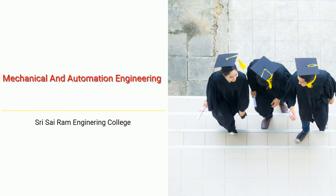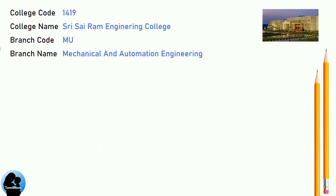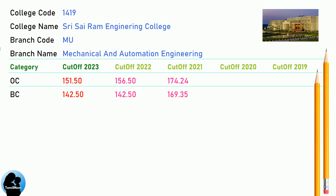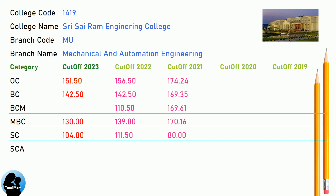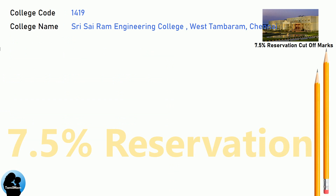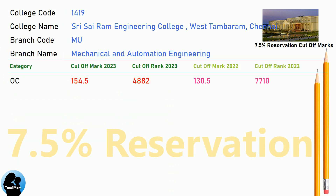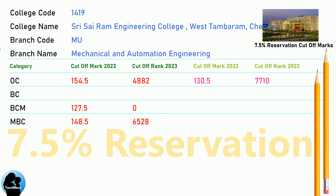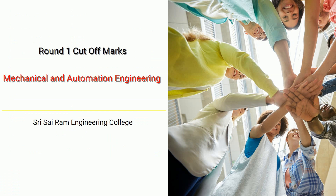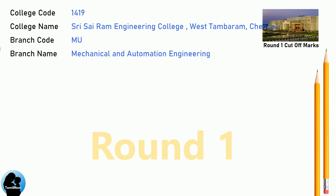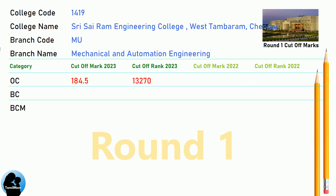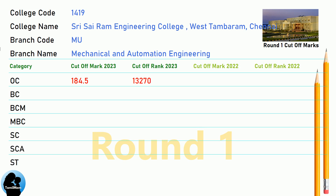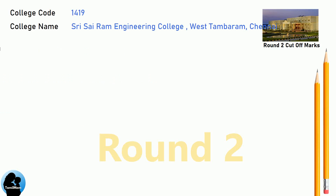DNA Cut-off for Shri Sai Ram Engineering College in Mechanical and Automation Engineering. DNA 7.5 Reservation Cut-off for Shri Sai Ram Engineering College in Mechanical and Automation Engineering. DNA 8.5 Reservation Cut-off for Shri Sai Ram Engineering College in Mechanical and Automation Engineering. DNA Round 2 Cut-off for Shri Sai Ram Engineering College in Mechanical and Automation Engineering.